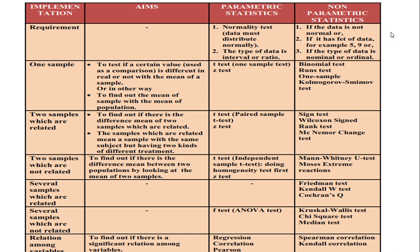Next, we discuss when to use parametric statistics and when to use non-parametric statistics. If we have one sample in our research — the aim being to test if a certain value differs from the mean of the sample, or to find out the mean of the sample versus the mean of the population — we go to parametric statistics first.